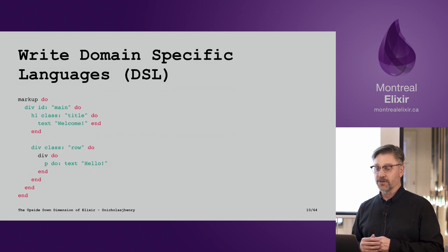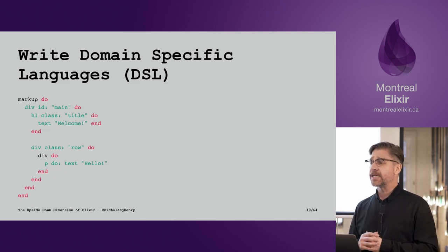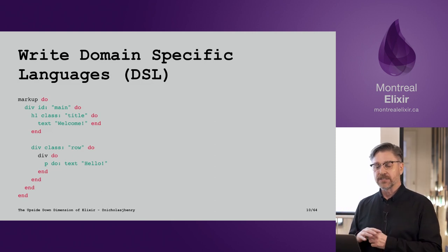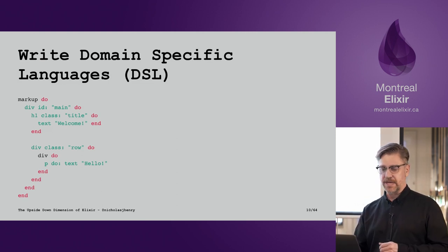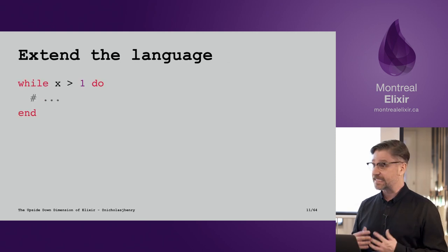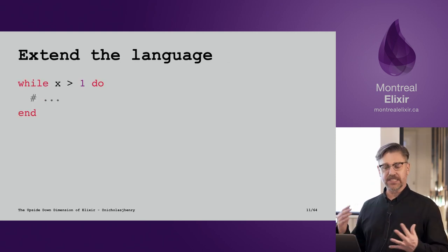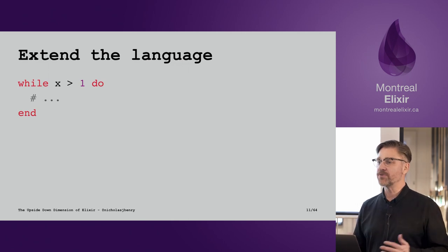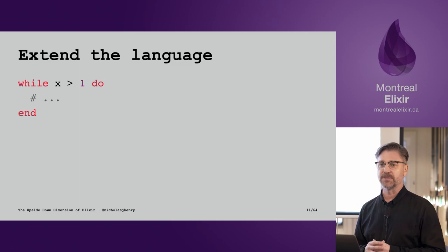You can write domain-specific languages. A great example here is HTML — this feels a little bit closer to crafting an HTML page. You can extend the language and add features. Are you missing a while loop? You can go ahead and make that feel like a first-class feature in Elixir.